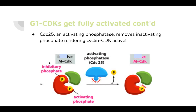There was a question about whether WE1 is active at the G2/M phase checkpoint. Since there are specific cyclins and CDKs for each phase of the cell cycle, the same mechanism — WE1 adding an inhibitory phosphate — happens multiple times, just for different cyclins. The mechanism is basically the same throughout.